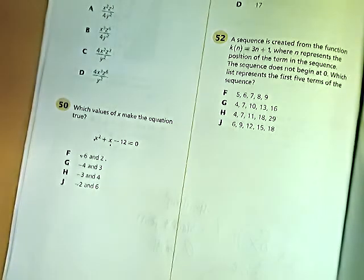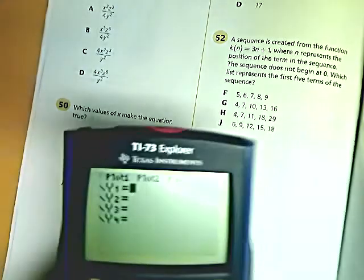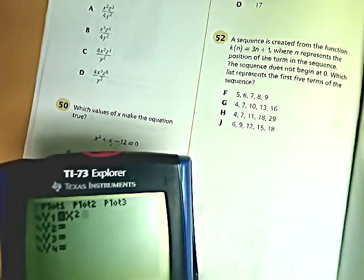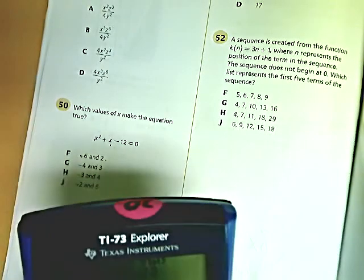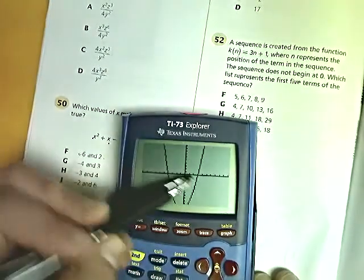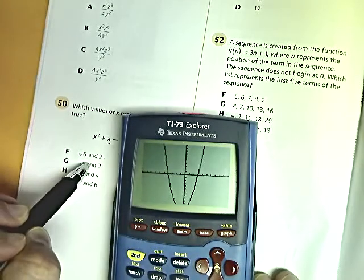The first is to just graph it. You can graph any of the x squares, and it gives you the answer very simply. x squared plus x minus 12, and I'll graph it. You can see it crosses at plus 3, and it also crosses at negative 4. That's the answer right there.